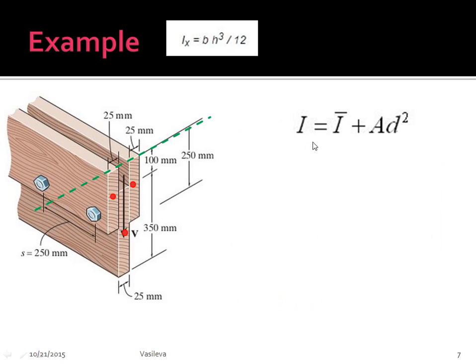Now, the next thing we need to do once we've found y bar is use the parallel axis theorem. So here's my start from the top. This red line is my neutral axis, which we just found 186.8 millimeters from the top.